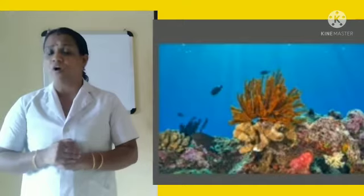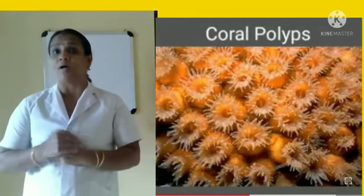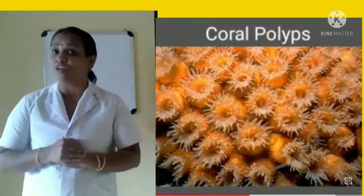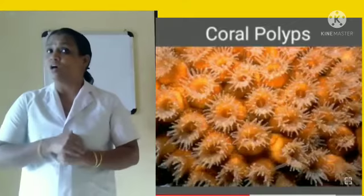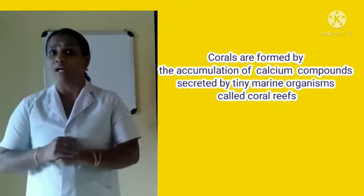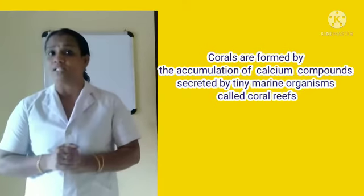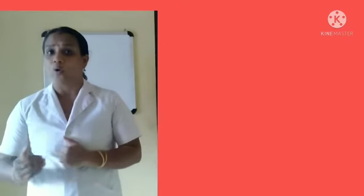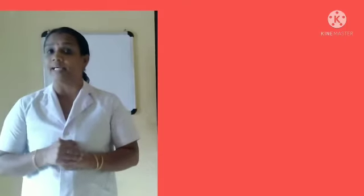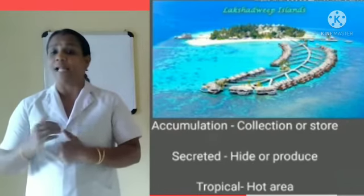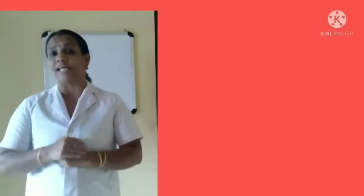What are coral reefs? Corals are formed by the accumulation of calcium compounds. Coral polyps are found in tropical oceans. Lakshadweep islands are formed of these accumulated coral polyps.